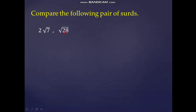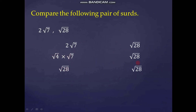For the second example, compare 2 root 7 and root 28. The second SIRD is already in pure form, so we only need to convert the first. Writing 2 as root 4 (since root 4 equals 2), the first SIRD becomes root 4 times root 7, which equals root 28.